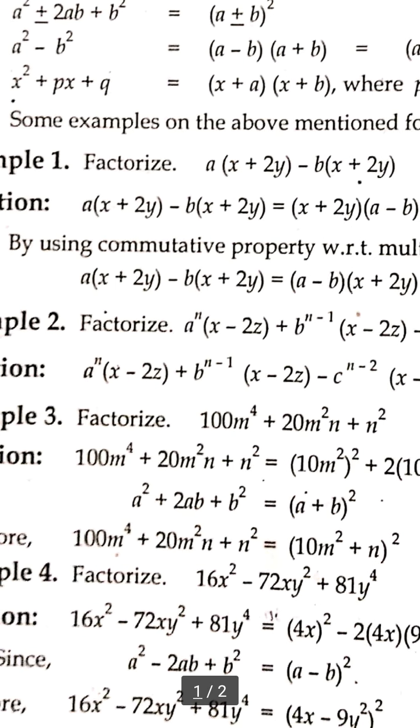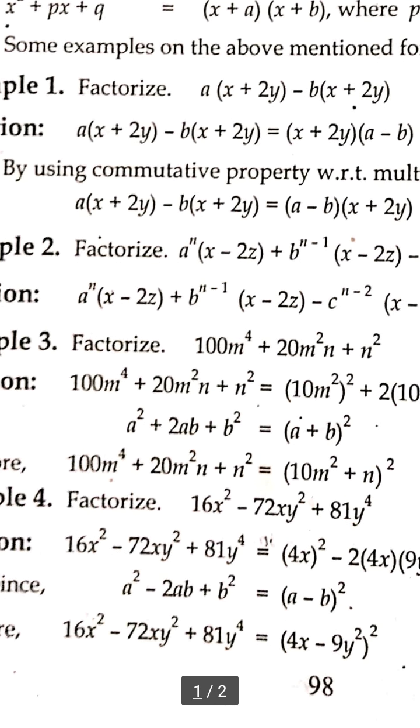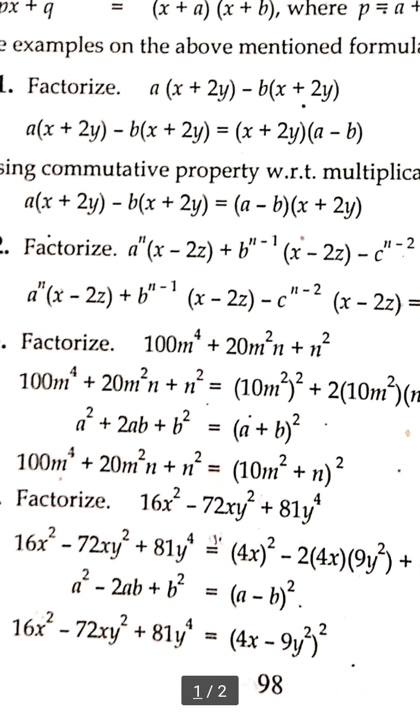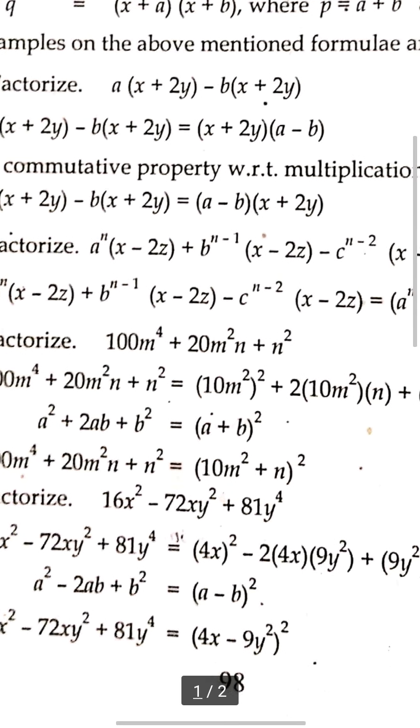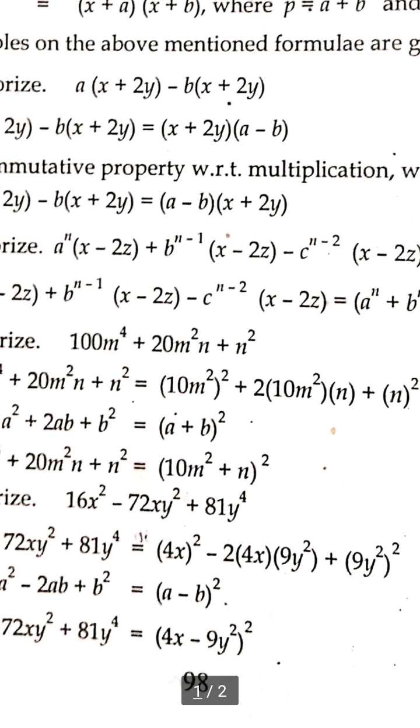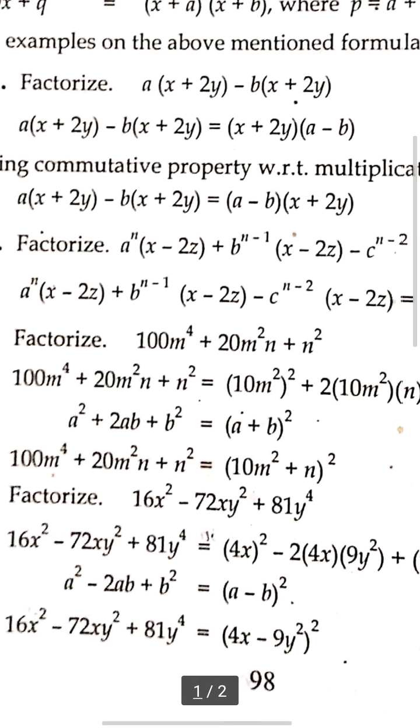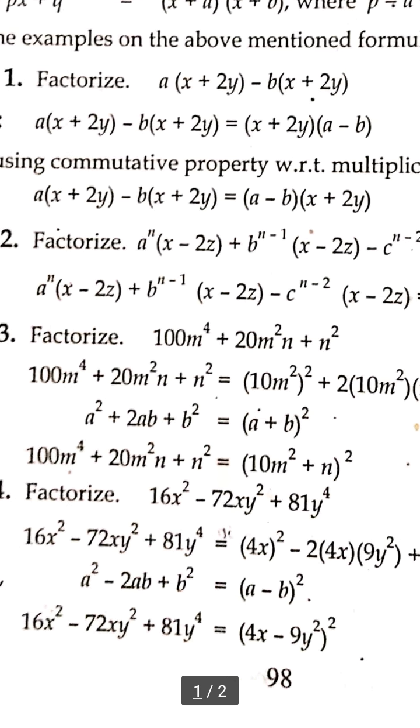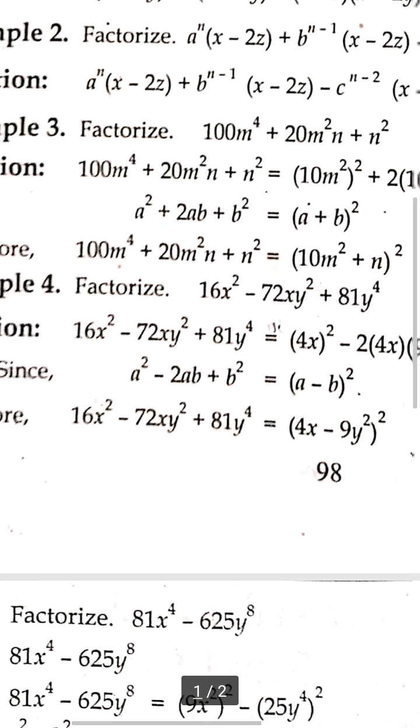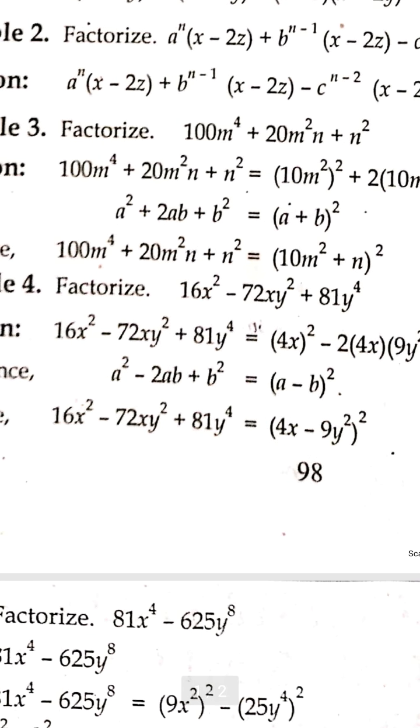Example 3: Factorize 100M⁴ + 20M²N + N². We can use the formula A² + 2AB + B² = (A + B)². This becomes (10M²)² + 2(10M²)(N) + (N)², which equals (10M² + N)².